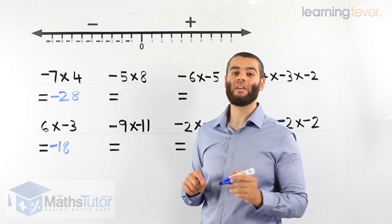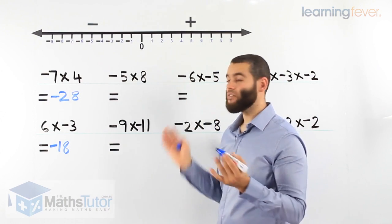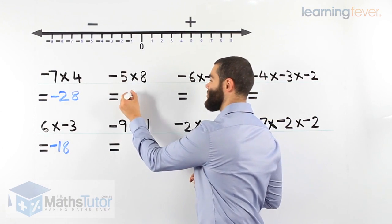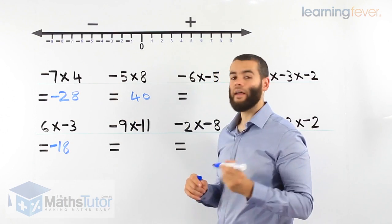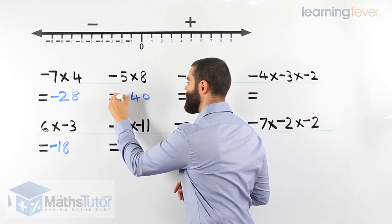Negative 5 times 8. You do this one. What's 5 times 8? 40. And we have a negative, we put it in.